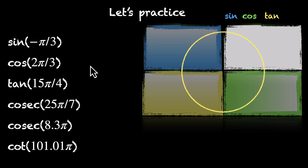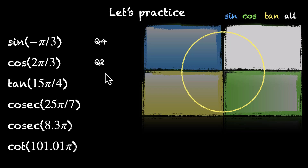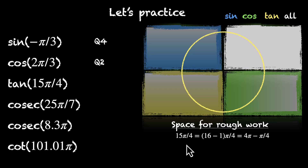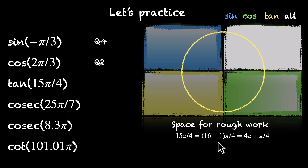Minus pi by 3 is minus 60 degrees. This means we are moving in the clockwise direction. 60 degrees is less than 90, which means we are still in the fourth quadrant — so this is Q4. What about 2 pi by 3? That's twice 60, which is 120 degrees. This is in the second quadrant. What about 15 pi by 4? This needs some calculation. We can write 15 as 16 minus 1, so this is (16 minus 1) pi by 4, which equals 4 pi minus pi by 4. So 15 pi by 4 is slightly less than 4 pi, placing it in the fourth quadrant — Q4.